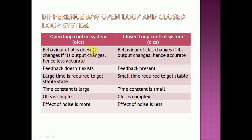Now the difference between open loop and closed loop systems. The behavior of an open loop system does not change if its output changes, hence it is less accurate. The behavior of a closed loop control system changes if its output changes, hence it is accurate. Feedback does not exist in the open loop system, whereas in the closed loop system feedback is present.